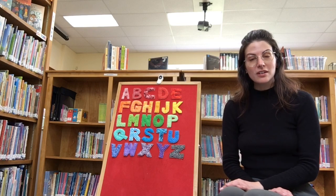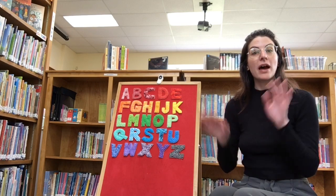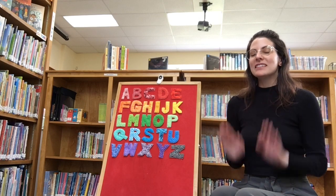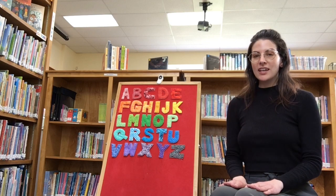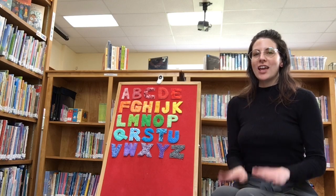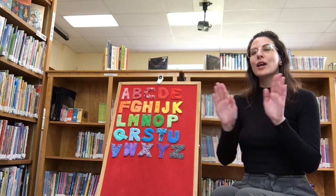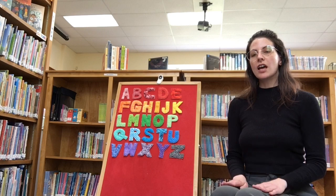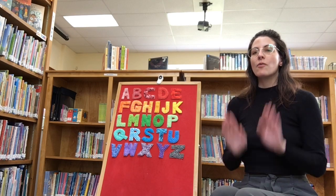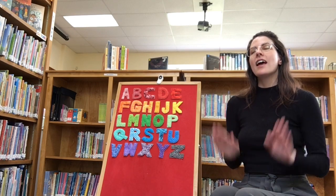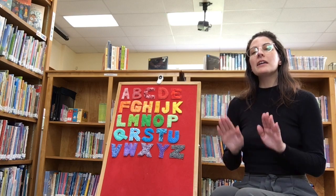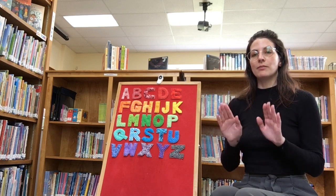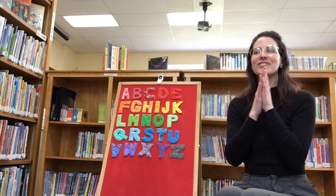Before we go into our first book, let's sing the alphabet together. If you'd like, you can clap along with me. A, B, C, D, E, F, G, H, I, J, K, L, M, N, O, P, Q, R, S, T, U, V, W, X, Y, and Z. Now I've sung my ABCs. Next time won't you sing with me? Good job, guys.